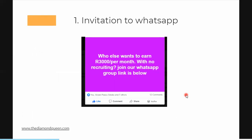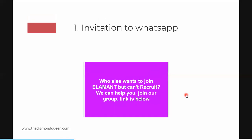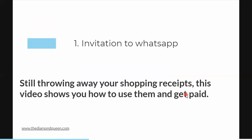Let's talk about the invitation to WhatsApp. You've created your WhatsApp group and added your team leader. Here's a script I've been using — I go on Facebook and share in network marketing related groups: 'Who else wants to earn 3,000 runs per month with no recruiting? Join our WhatsApp group, link is below.' That's it. I don't explain what Element is or go into history — you just write something that grabs people's attention and brings them to your WhatsApp group. Another write-up: 'Who else wants to join Element but can't recruit? We can help. Join our WhatsApp group.' That's all.